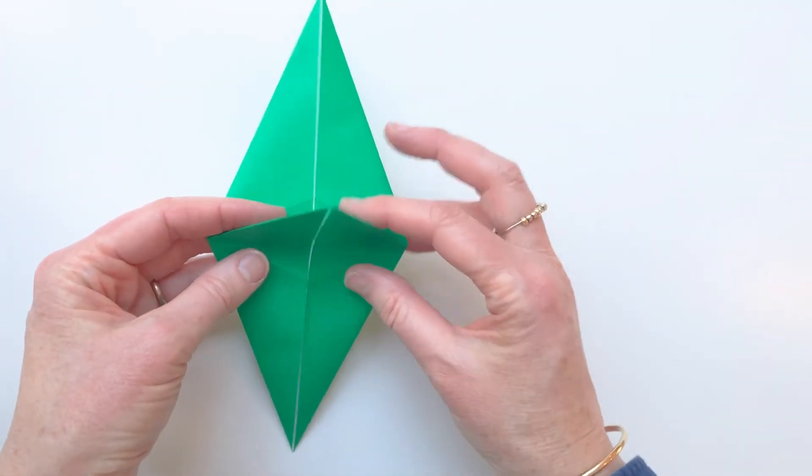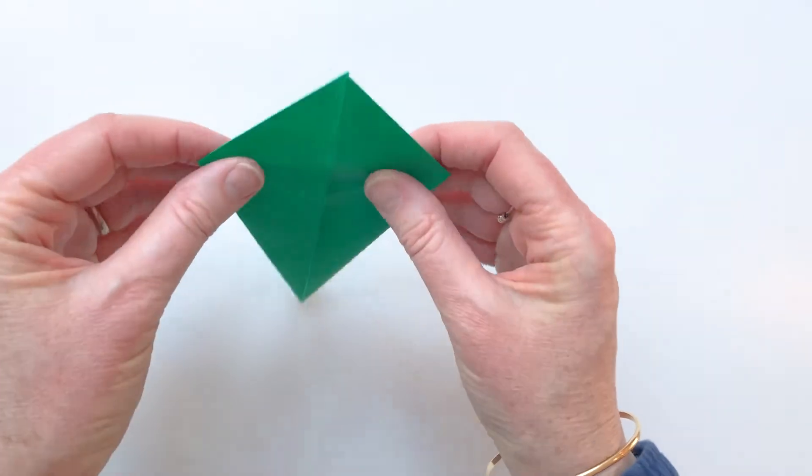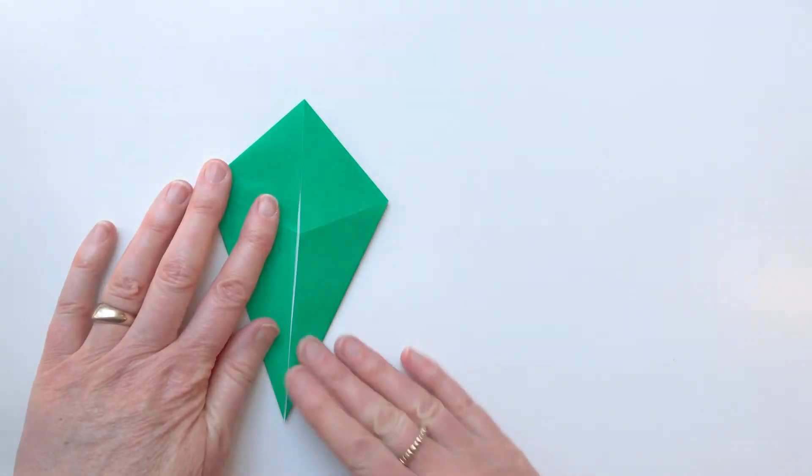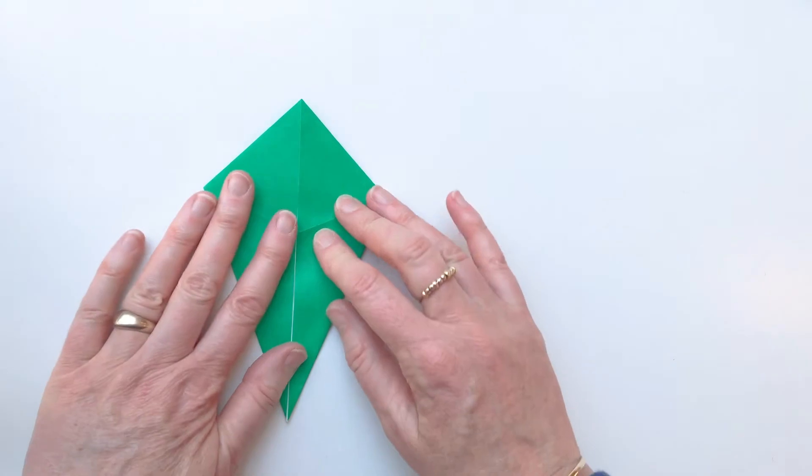Then you're going to take the back bit that's behind the flaps and fold it down. So you end up with a kite shape.